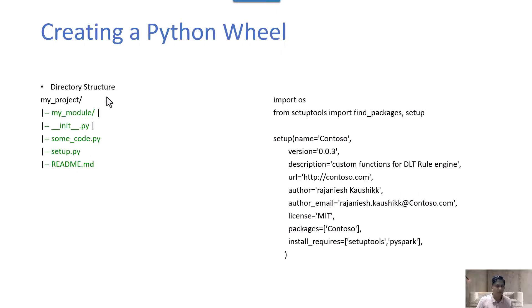Now let's understand how to create a Python wheel library. Whenever you create one, you need to follow a certain directory structure, and in PyCharm this structure is very easy. You create a Python package — called a module in Python. Suppose the module name is 'my_module'; it will create a folder with an __init__.py file and your Python code inside. Outside this module there is a setup.py file, and optionally a README file describing the project.